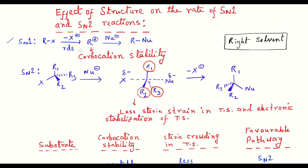In SN1 reaction, the formation of the carbocation is the first step and that is the rate-determining step. The stability of the carbocation will determine the rate of the reaction. If the carbocation is getting high stabilization due to several stabilizing factors like hyperconjugation, resonance effect, homoconjugation, or aromaticity, then the stabilized carbocation will lower the activation energy for the first step.